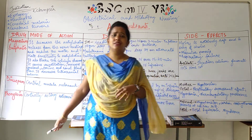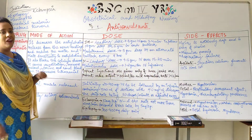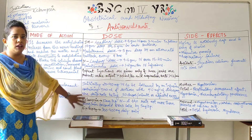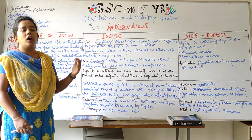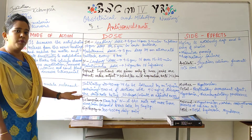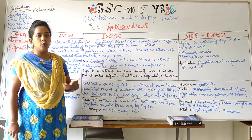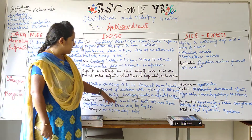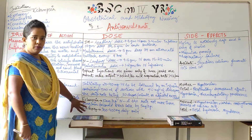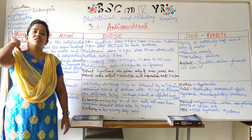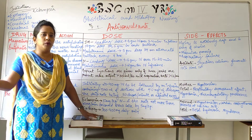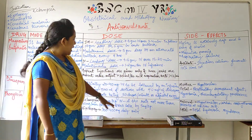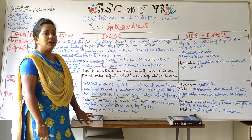Phenytoin also has central activity, relaxing muscles and reducing the effect of convulsions. For eclampsia, the dose is 10 mg per kg body weight IV, administered at a rate not more than 50 mg per minute. Then 2 hours later, the maintenance dose is 5 mg per kg. The rate must never exceed 50 mg per minute to avoid drug complications.